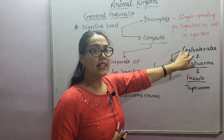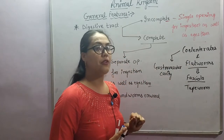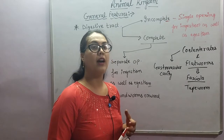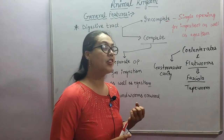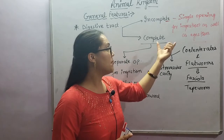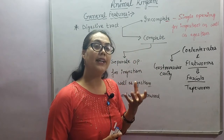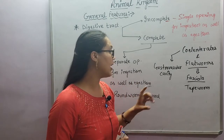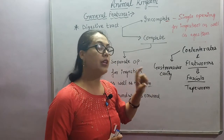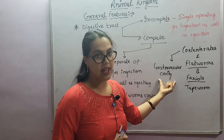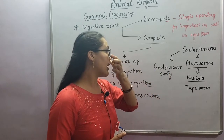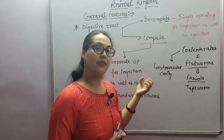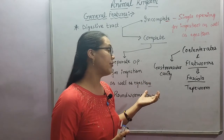This type of digestive tract - the incomplete digestive tract - is seen in coelenterates and flatworms. In coelenterates, examples we have are jellyfish and Hydra. In these, the digestive tract is a blind tube-like structure, closed at one end and open at only one side. This tube is called the gastrovascular cavity.